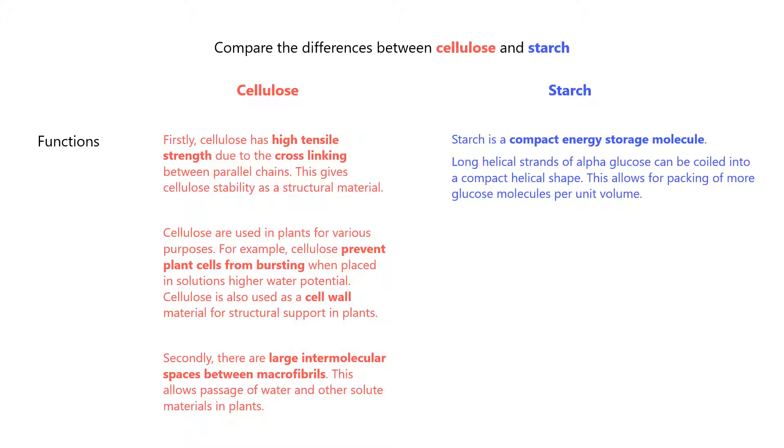Starch is a compact energy storage molecule. Long helical strands of alpha-glucose can be coiled into a compact helical shape. This allows for packing of more glucose molecules per unit volume.